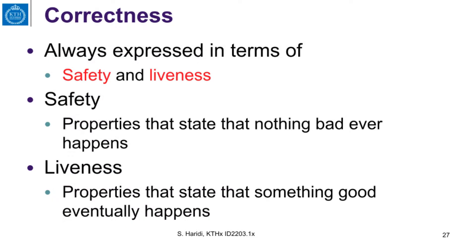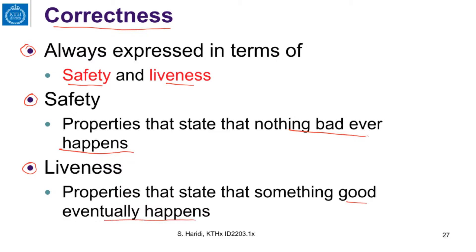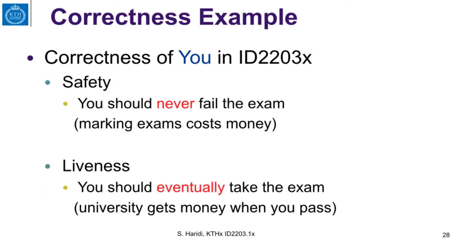Correctness of a service or an algorithm will always be expressed in terms of safety and liveness properties. Safety properties state that nothing bad ever happens in an execution, and liveness properties state that something good will eventually happen in every execution.